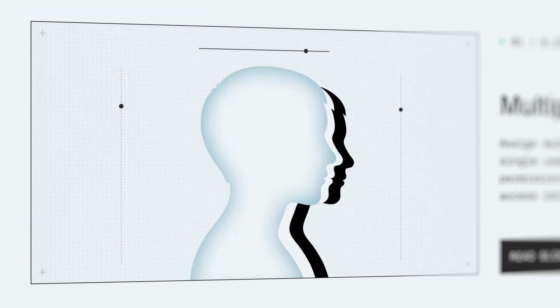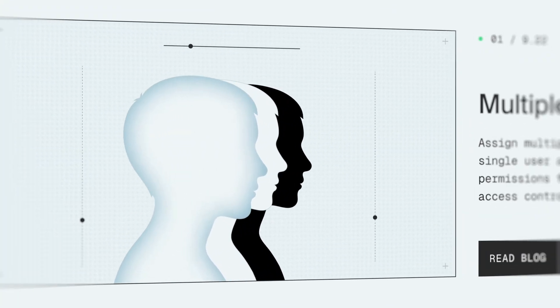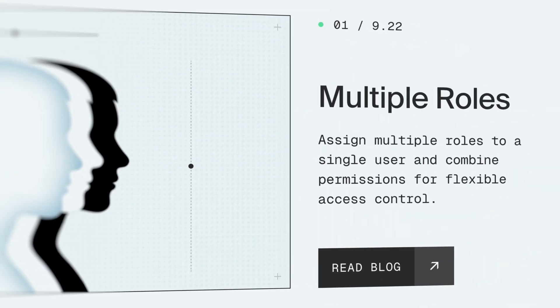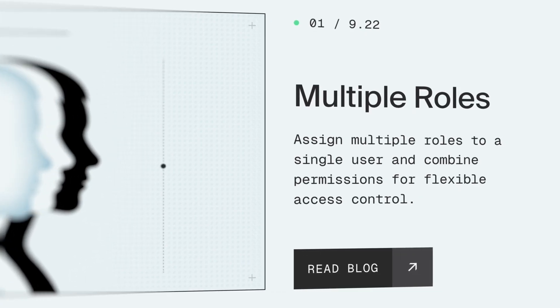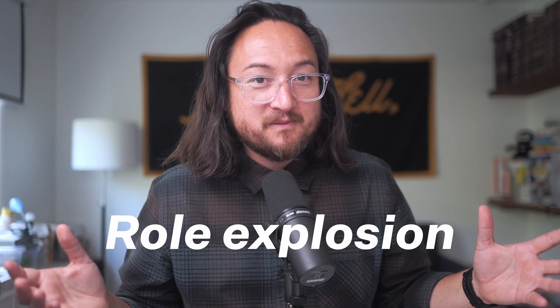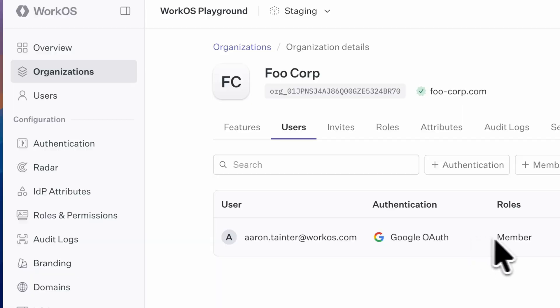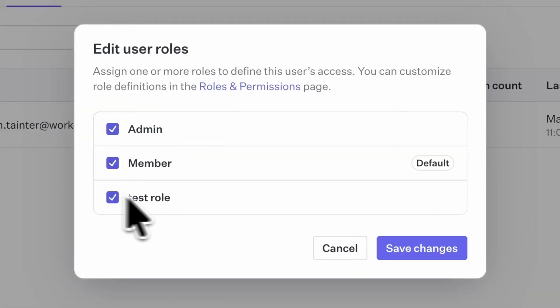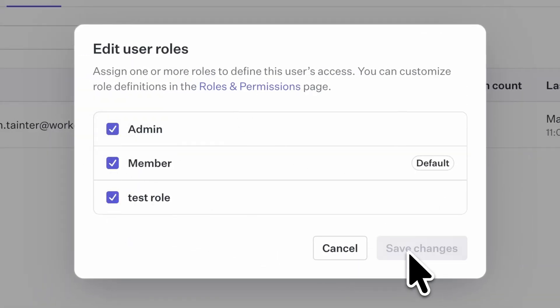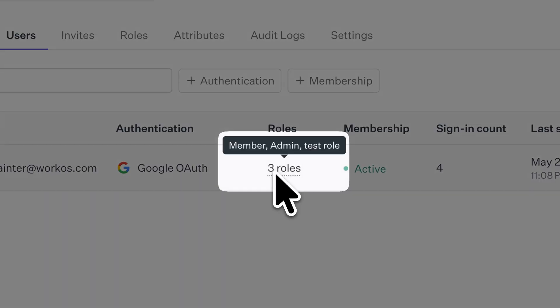First up, multiple roles. Assign multiple roles to a single user and combine permissions for flexible access control. If you've used single role-based RBAC solutions in the past, you may have suffered from role explosion. That's no longer a problem with WorkOS, where you can now assign multiple roles to a single user, and that user gets the union of all of the permissions that those roles include.